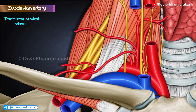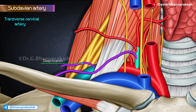Sometimes the two branches arise separately — the superficial from the thyrocervical trunk and the deep from the third part of the subclavian artery. These are then named as superficial cervical and dorsal scapular arteries.